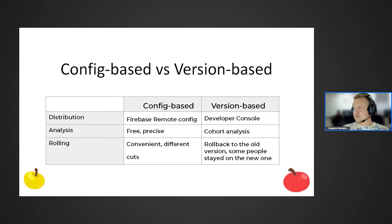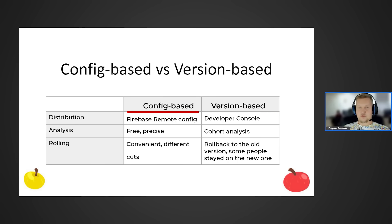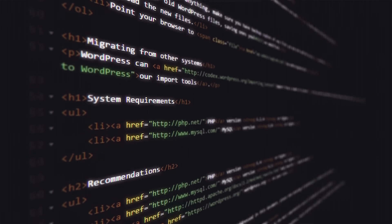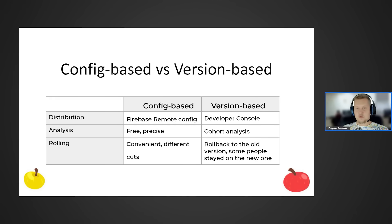There are two distribution options: config-based and version-based. In config-based, you create a variable in Firebase under the Remote Config tab, whose value you can retrieve in your product's code. You set this value in the Firebase console and release a fresh build. Within this build, Firebase splits your users into two cohorts, each receiving different values for the variable you created, and based on that value you provide the user with the experience corresponding to their cohort. You can also analyze multiple parameters and make decisions based on their combined results.